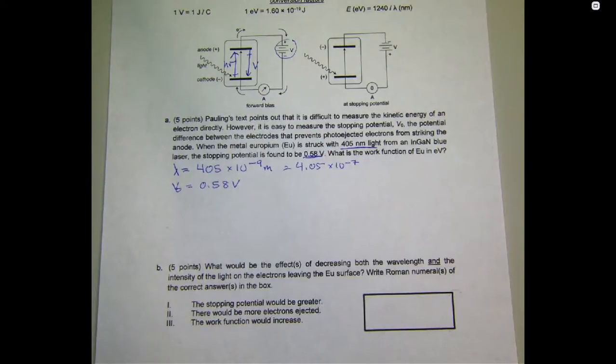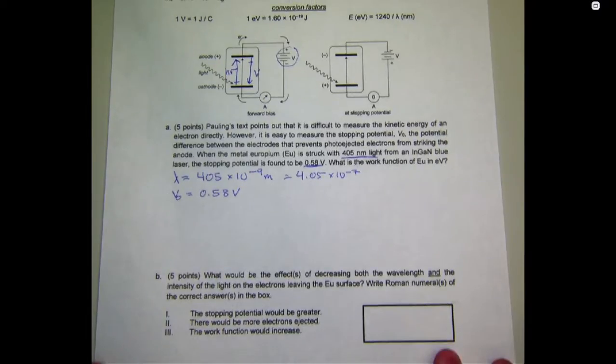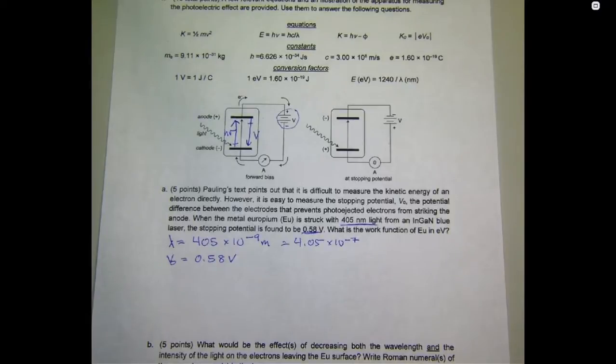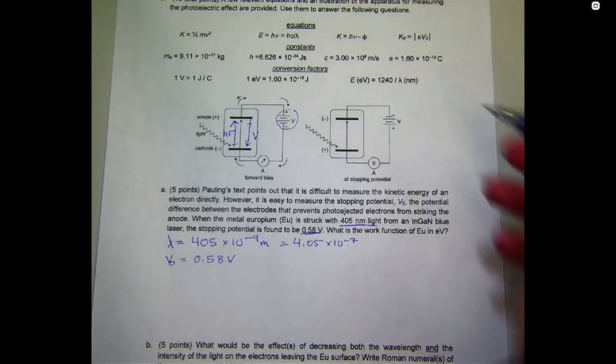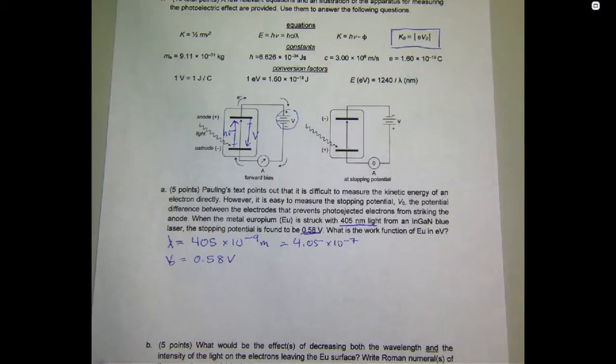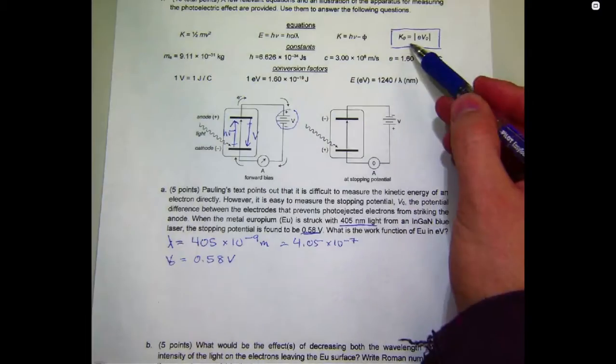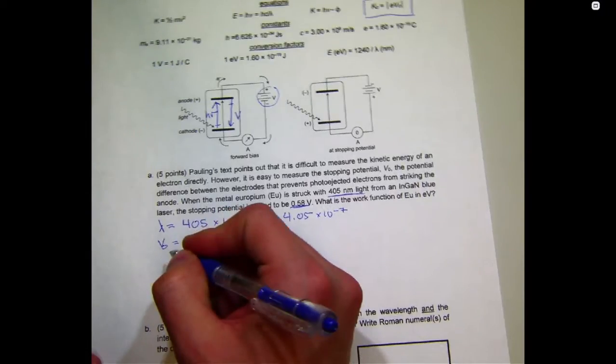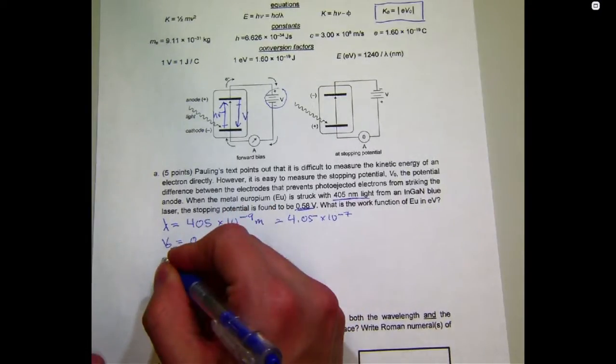So, what does that mean for us? That means that we can come up here to our equation bank and look at what we've got. That effect that I just described is summarized in this relationship in which the kinetic energy of an electron, k or k-naught, all k's are the same, is equal to the charge on an electron times the stopping potential. So, that's the first equation that we'll need to solve this problem. k equals the absolute value of e times v-naught.